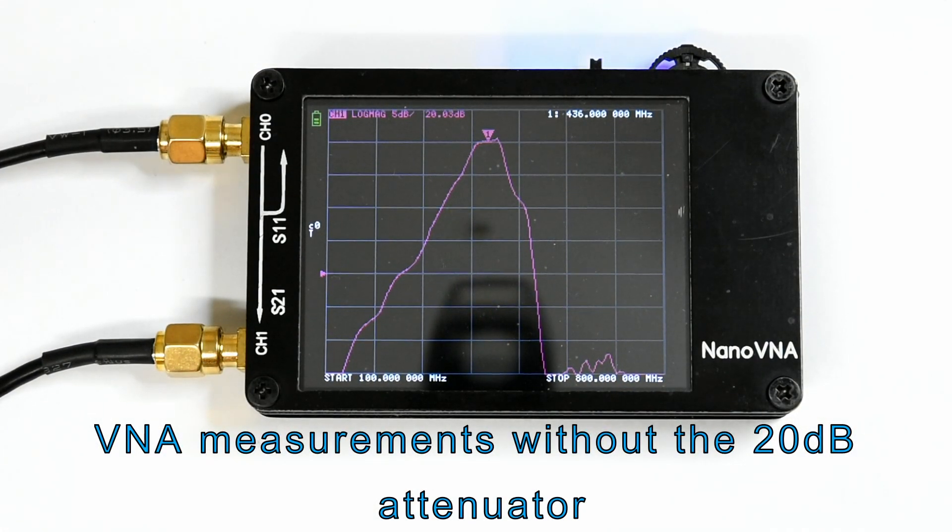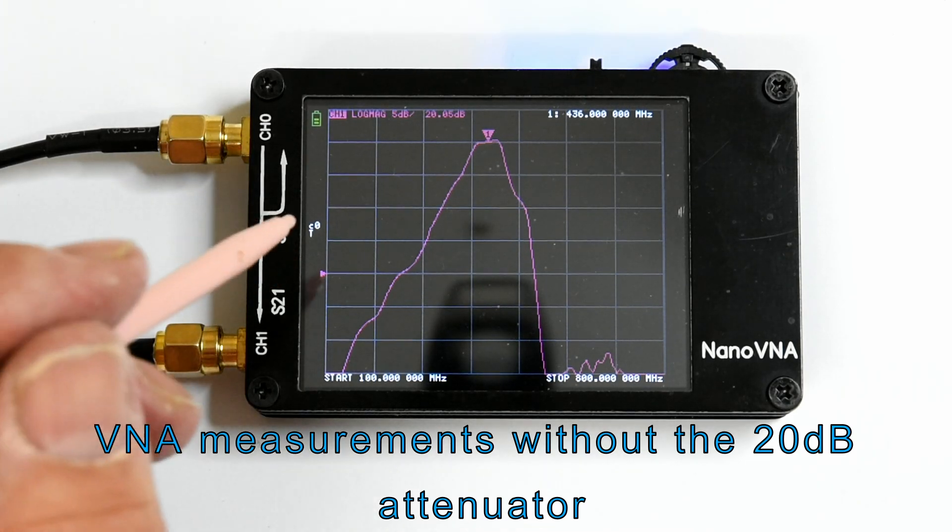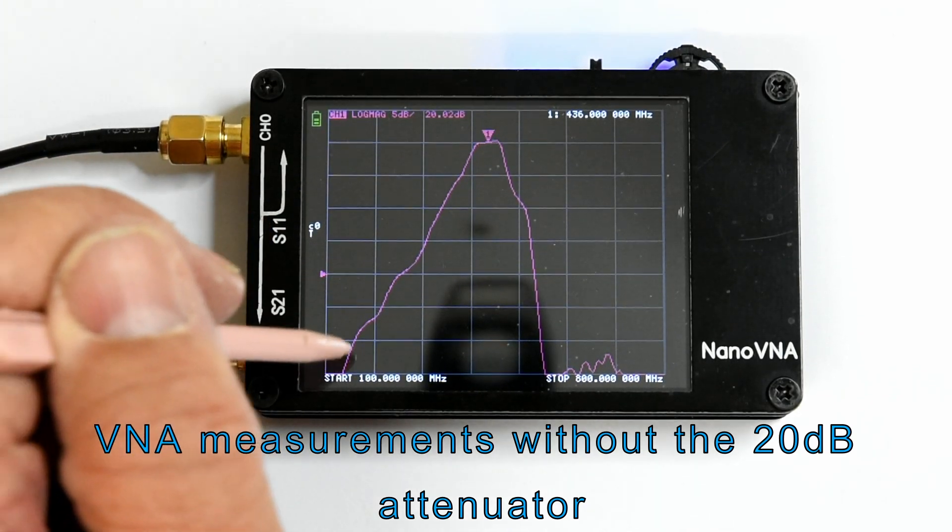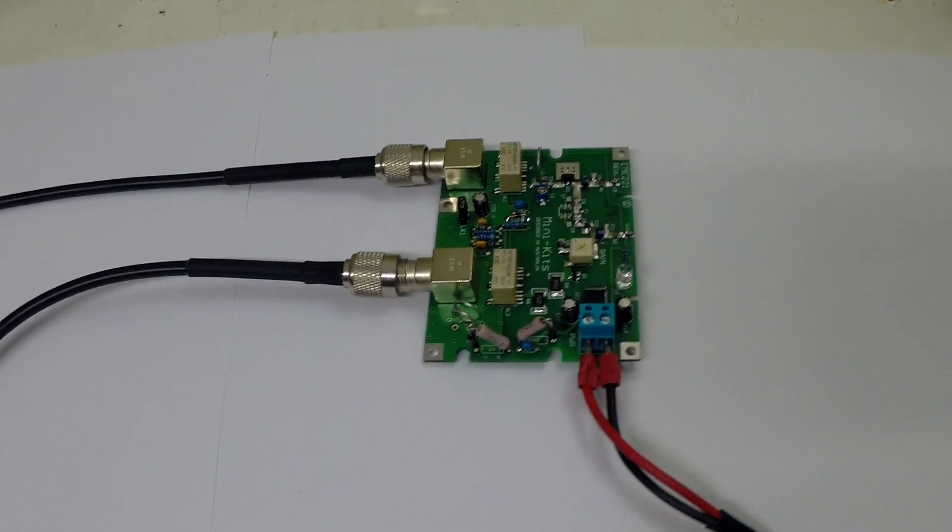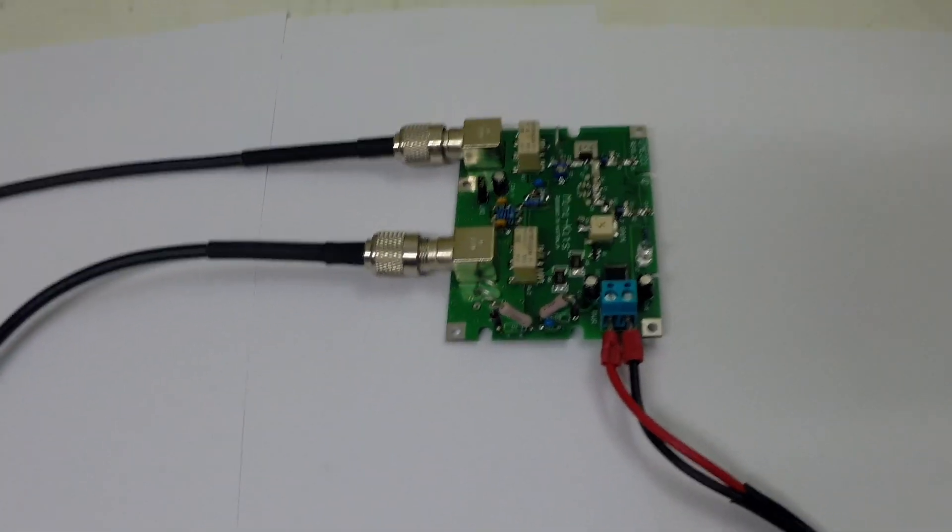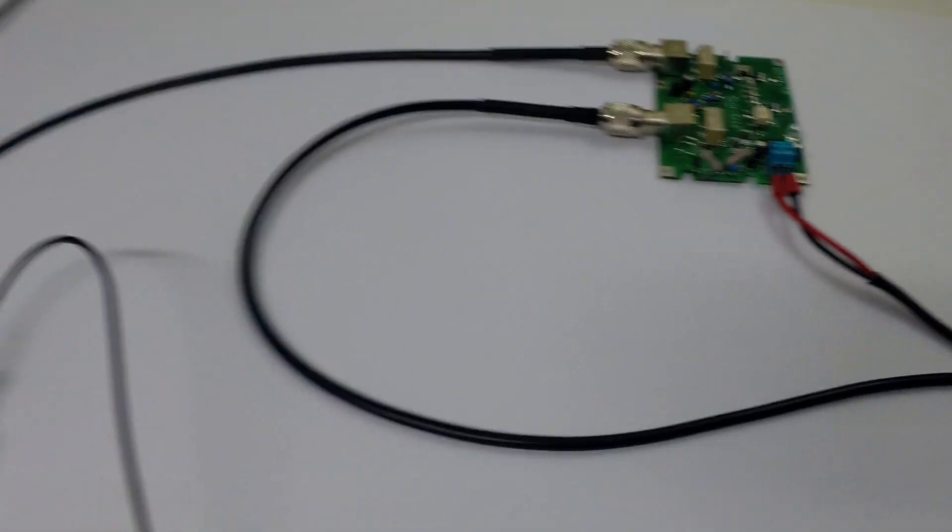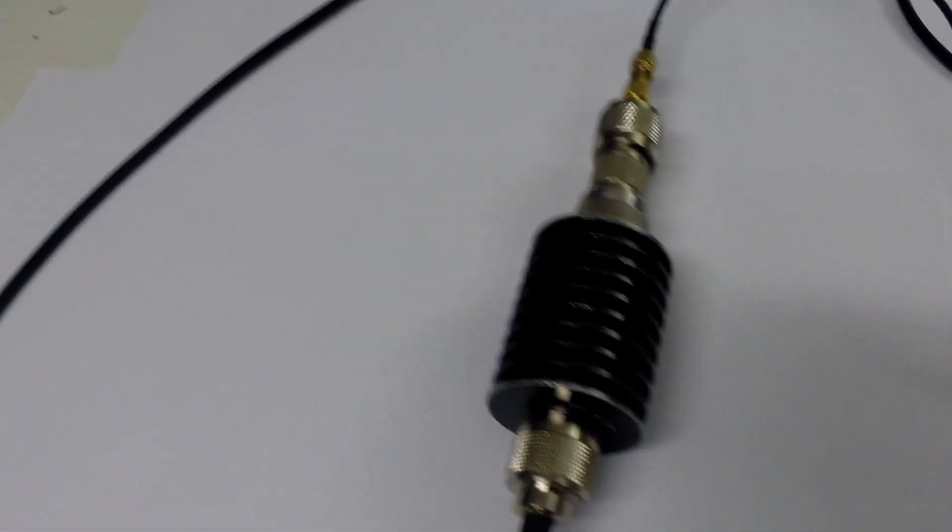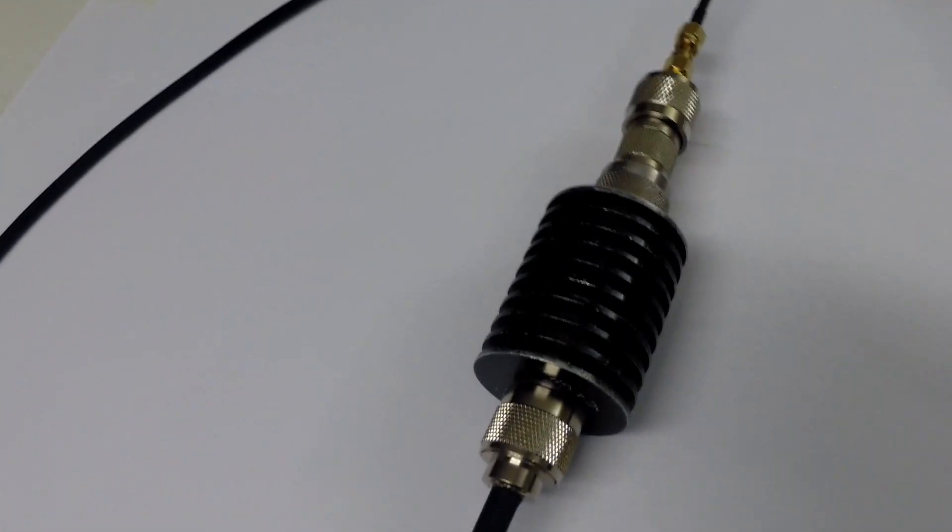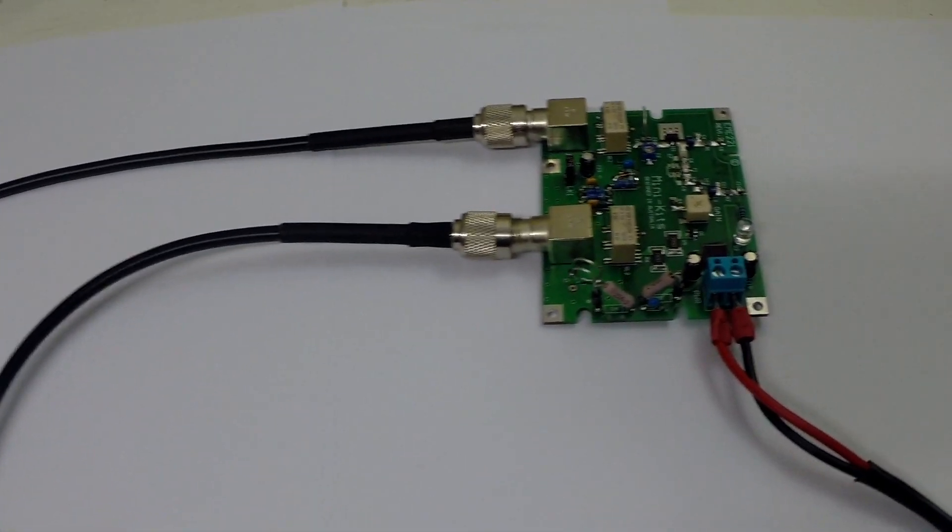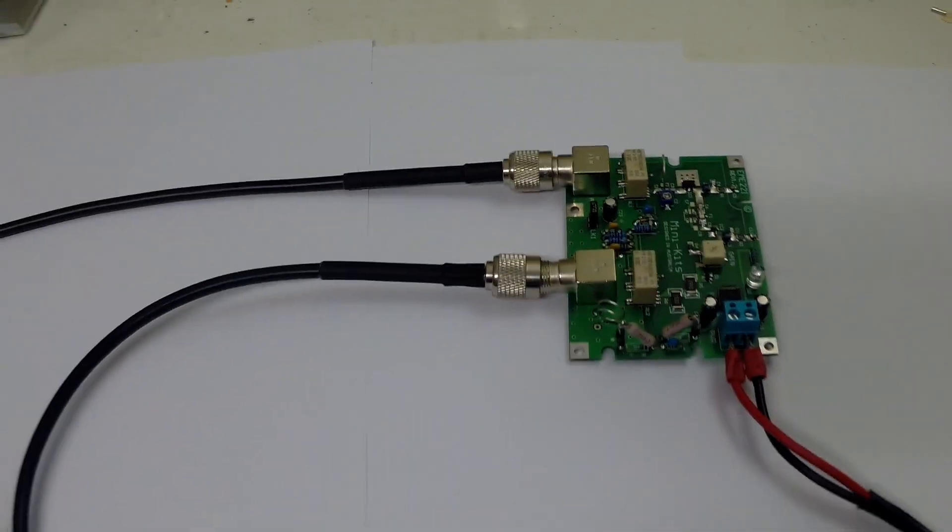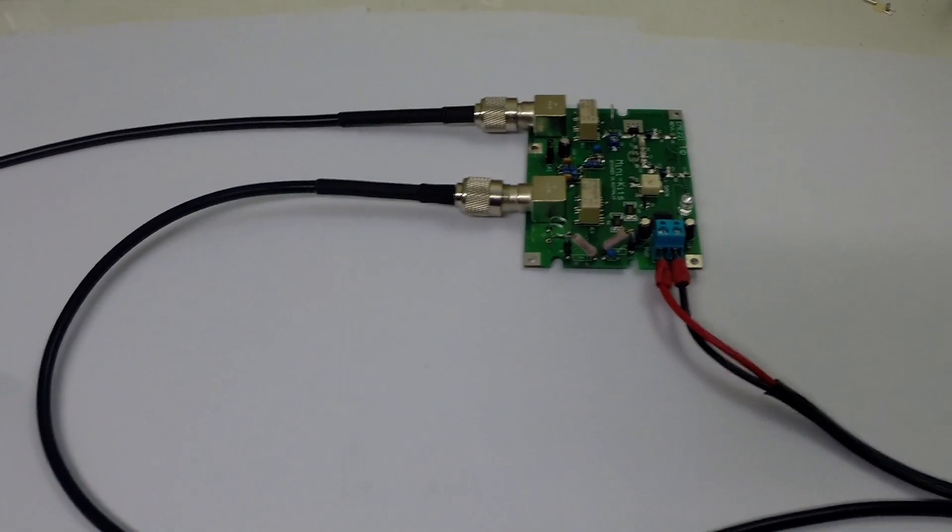I had actually thought it was the VNA but fairly quickly concluded it was the preamp itself being overloaded. So once it reached saturation it just couldn't get any more gain. So we weakened the signal by putting the 20 dB attenuator in there giving the preamp a nice weak signal to amplify and then we get a fairly meaningful response.